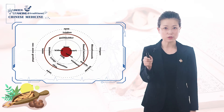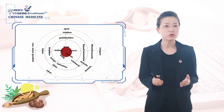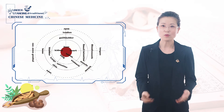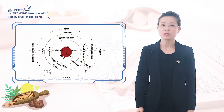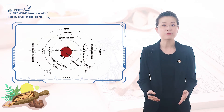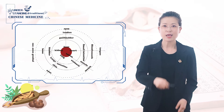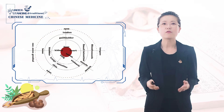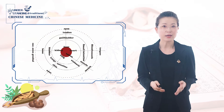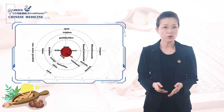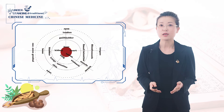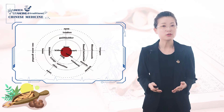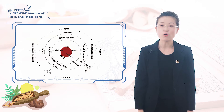In the third circle, there are 5 constituents, i.e. blood vessels, muscle, skin, bones and tendons, which are respectively connected with the 5 zhang organs. In the outmost circle, there are 5 orifices, i.e. tongue, mouth, nose, ear, anus and genitals, and eyes, which are respectively governed by the 5 zhang organs as well.